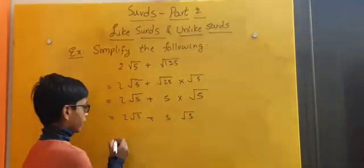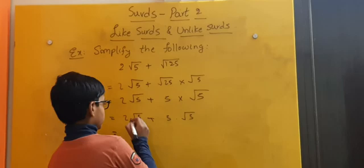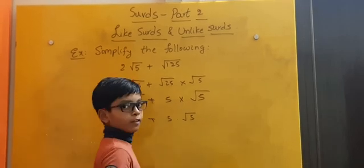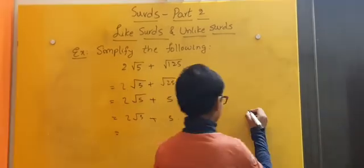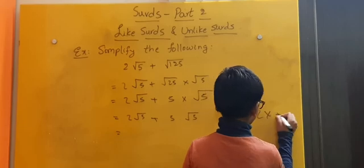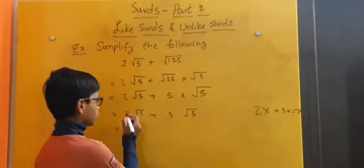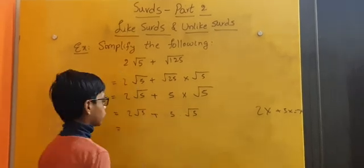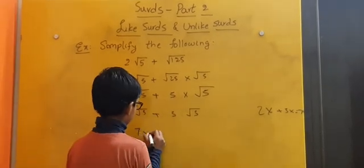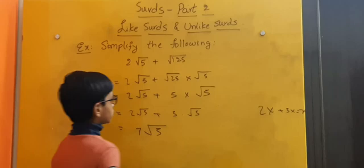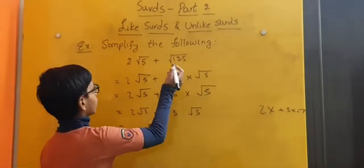From this we get 2√5 + 5√5. From this we get is equal to, here for this example we have a similar problem which is 2x + 5x which is 7x. So here 2√5 + 5√5 is 7√5. So in this way we have to simplify any unlike surds.